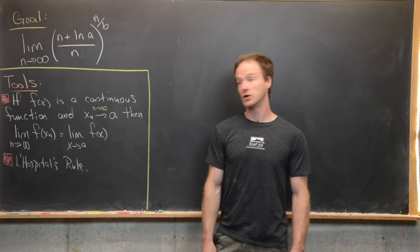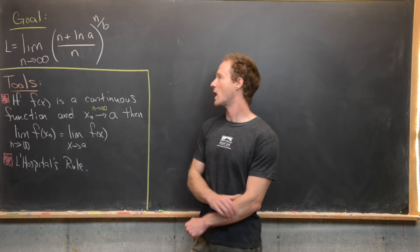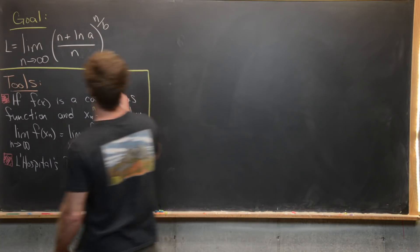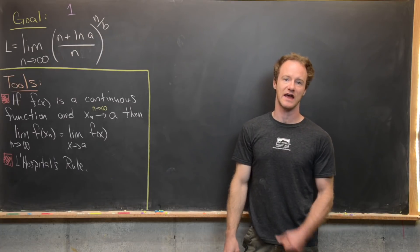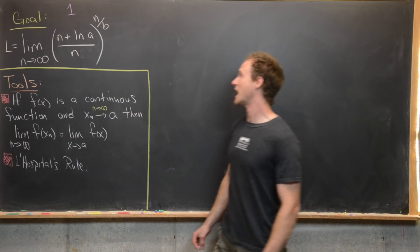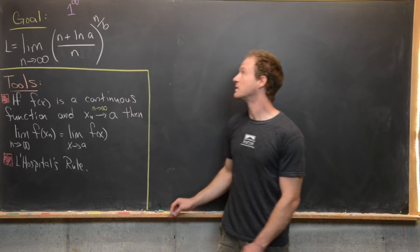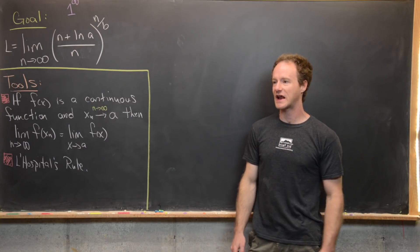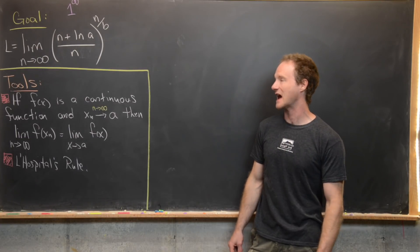Let's set this limit equal to L. The big hint is that as n approaches infinity, the interior of the parentheses approaches 1 — it's just a rational function, and ln(a) is a constant. In the exponent, n/b approaches infinity since b is a positive constant. So we have an indeterminate form of type 1^∞. The strategy is to set the limit equal to L and take the natural log of both sides.